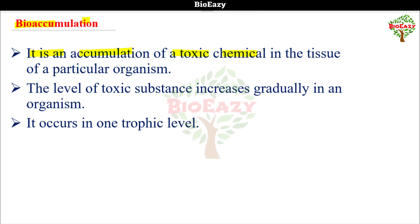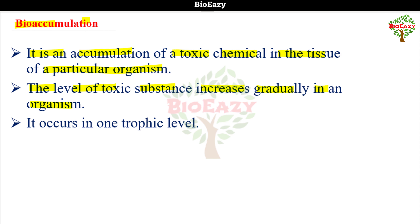Next is bioaccumulation. It is an accumulation of toxic chemicals in the tissue of a particular organism — ek hi organism ke andar toxic chemical ka accumulation or deposition hona is called bioaccumulation. The level of toxic substance increases gradually in an organism, and this process occurs at only one trophic level.